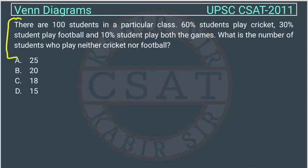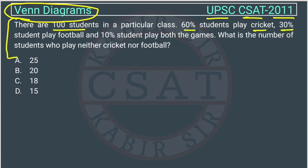This is a question of reasoning from the Venn diagram chapter, asked by UPSC in the CSAT paper of 2011. There are 100 students in a particular class. 60% of students play cricket, 30% play football, and 10% play both games. What is the number of students who play neither cricket nor football?